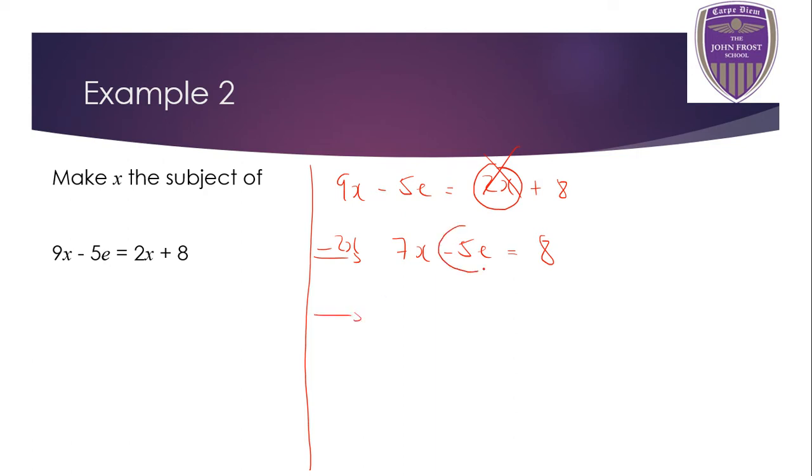These 5e's now, this time they're negative, so I'm going to have to add them on this time. Again, you cannot combine these terms, they're unlike terms, so leave it like that. And then I'll divide by 7, and I am done.